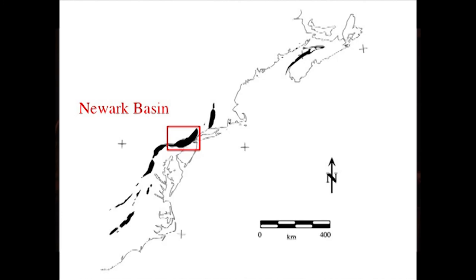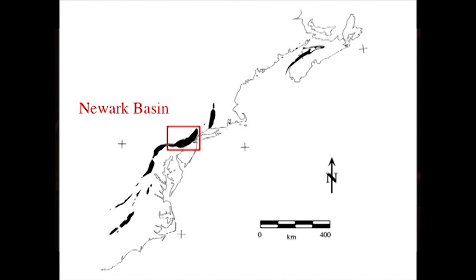One of the great things about the Wachung Reservation is the topography. I'm sure all of you have walked around here and enjoyed the hills and the valleys. I want to put that in context, because as you walk up and down these hills you are seeing the results of what was happening 200 million years ago in the Newark Basin.